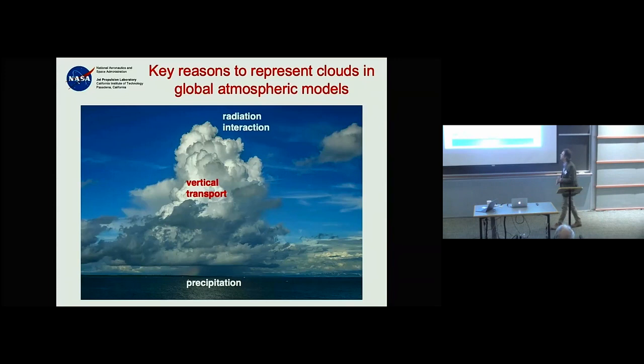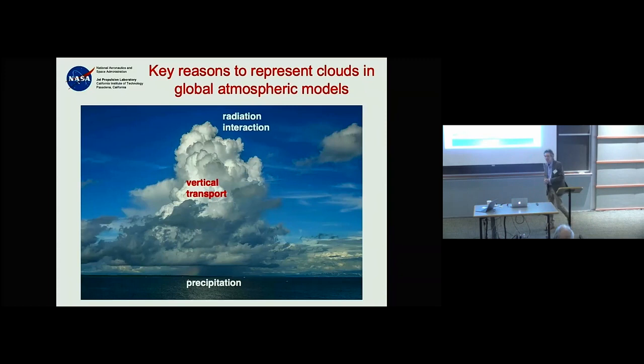To represent vertical transport we need to represent key aspects of clouds. And from a climate perspective, the intensity and significance of cloud–radiation interaction is so large in the climate system that models must include it.